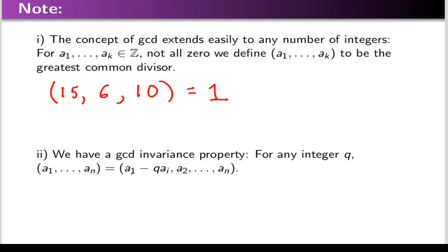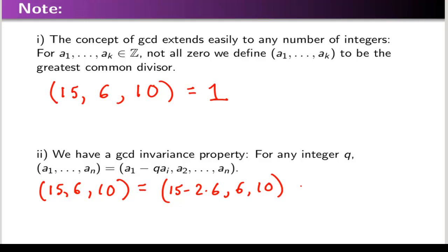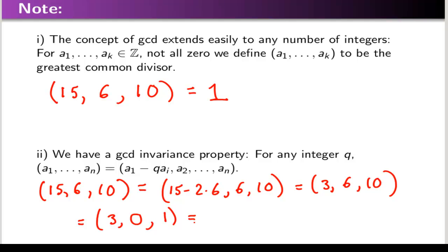So in this example, I've taken the first number and subtracted q times the ith number without changing the GCD. If I took the three numbers 15, 6, and 10, I could subtract two sixes from 15, reducing the first number to 3. Then subtract two threes from 6, and subtract three threes from 10. Then subtract three ones from 3. You keep going down until you just have a single non-zero entry, and that will be the greatest common factor.